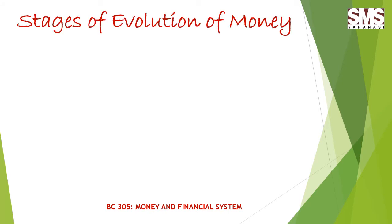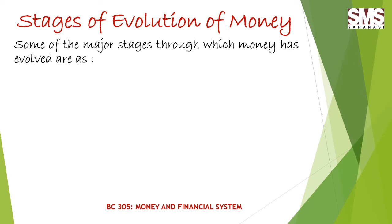The evolution of money has passed through the following stages. The word money is derived from the Latin word 'moneta,' which was the surname of the Roman goddess of Juno. The origin of money was lost, and even in the primitive stage, man had some sort of money. The type of money differed based on the nature of man and their livelihood. In the hunting stage, the spines of animals were used as money; in the pastoral society, livestock were used as money; in the agricultural society, grains and foodstuffs were used as money; and in ancient Greece, money was used in the form of coins.